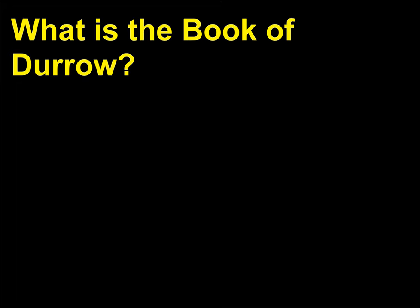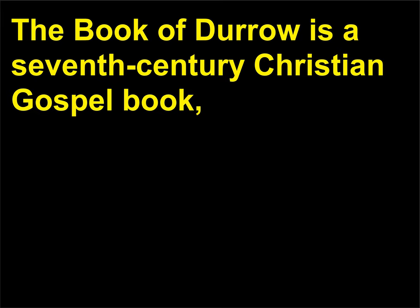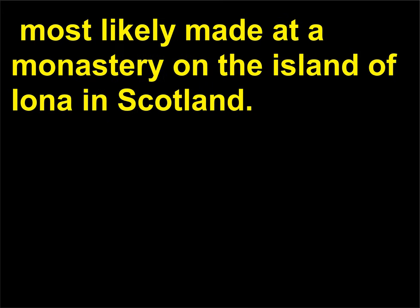What is the Book of Doe? The Book of Doe is a 7th century Christian gospel book, most likely made at a monastery on the island of Iona in Scotland.